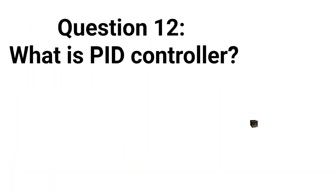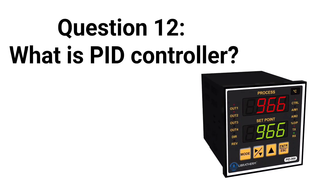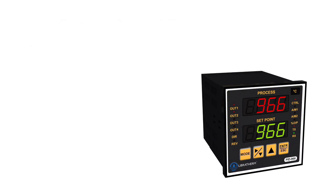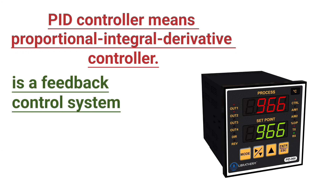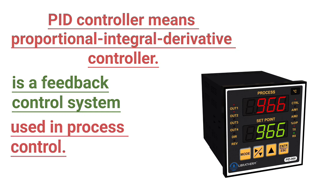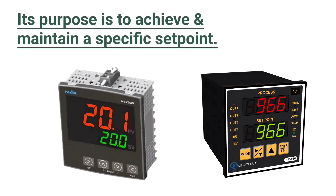Question 12: What is a PID controller? PID controller means proportional integral derivative controller. It is a feedback control system used in process control, and its purpose is to achieve and maintain a specific set point.